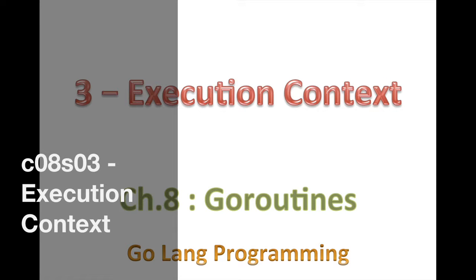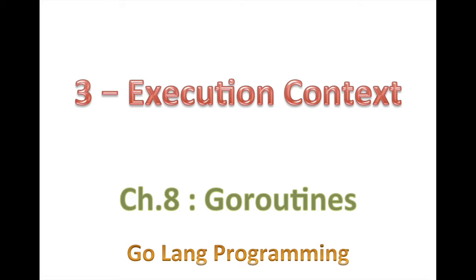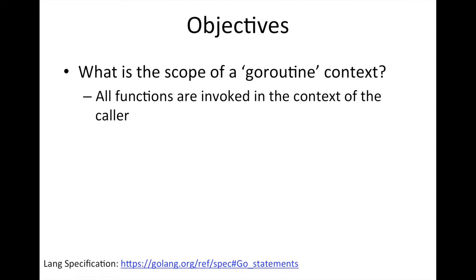In the last video, we were talking about goroutine context. What we basically said is a context is created to manage the execution of a goroutine. Of course, a goroutine is just a function launched by a function using the go keyword. So here, I want to talk a little bit more about the scope of a goroutine context.